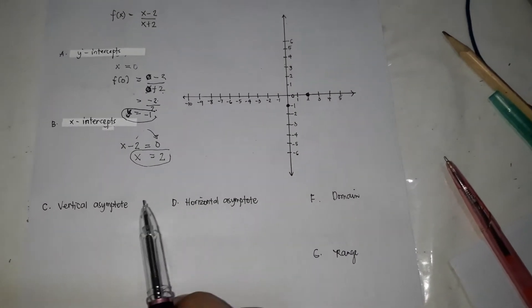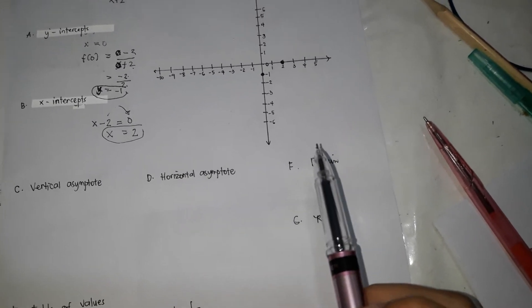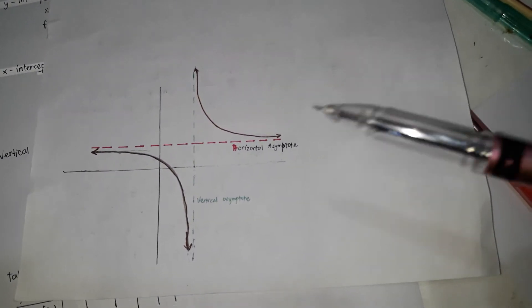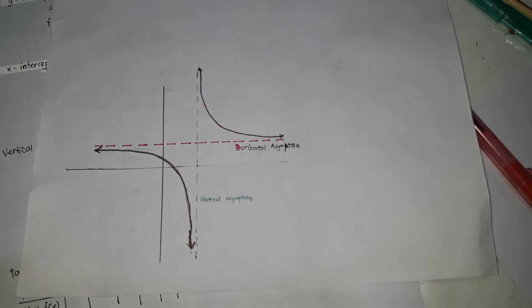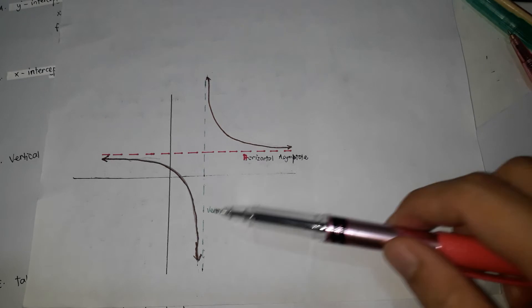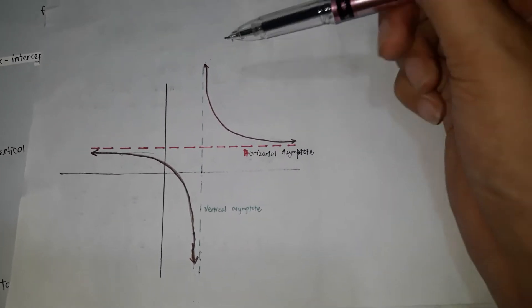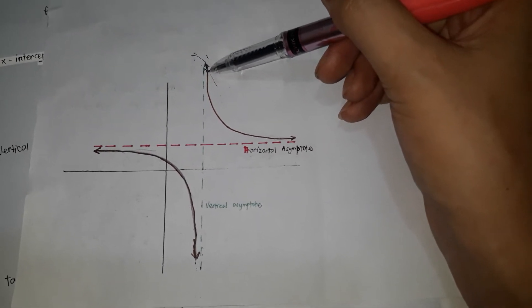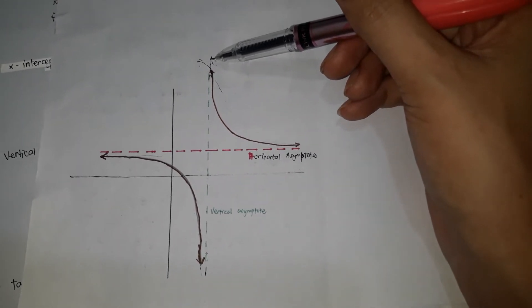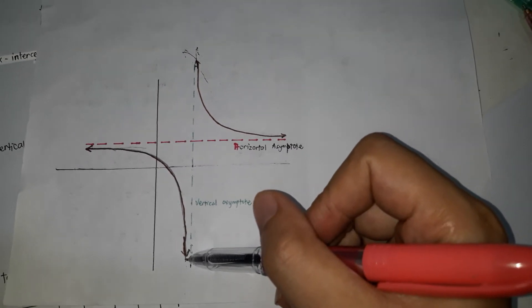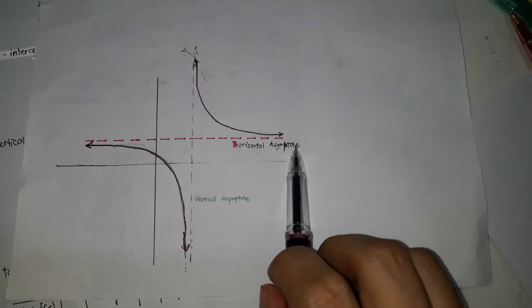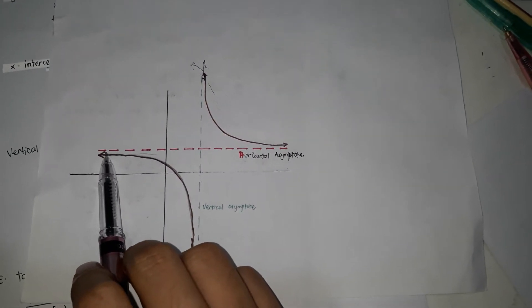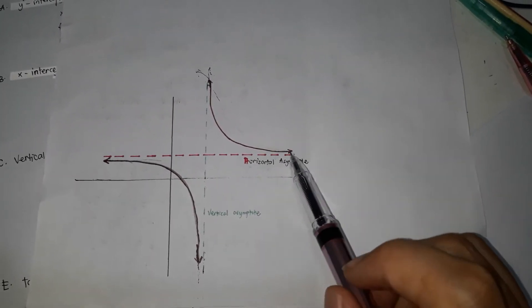Next, the vertical asymptote. Asymptotes are lines which the graph approaches but does not intersect. For example, this is the vertical asymptote and this is the horizontal asymptote. The graph approaches the vertical asymptote but does not cross it — the distance between the graph and the line keeps getting smaller and smaller. Similarly, the graph approaches the horizontal asymptote but does not cross it.